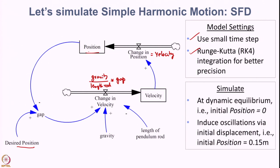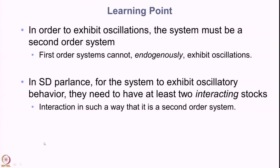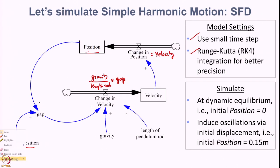Now we are going to simulate this in Vensim. First, we start the model at dynamic equilibrium — the desired position is 0 and the actual position is also 0, meaning no external force acts on the pendulum and nothing should happen. We can easily induce oscillation by setting an initial displacement of 0.15 meters. We will simulate both scenarios in Vensim and see what happens.